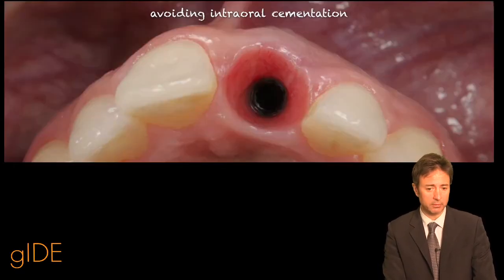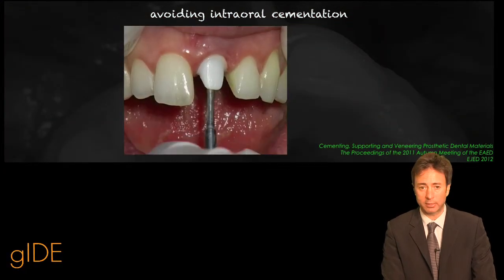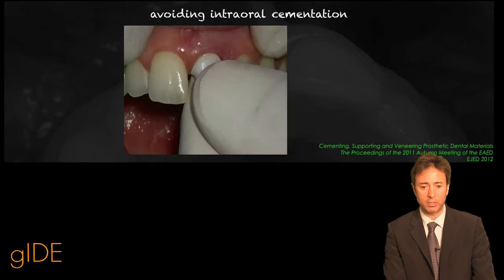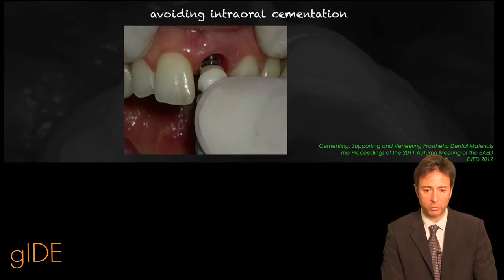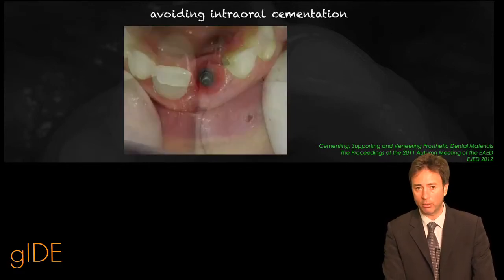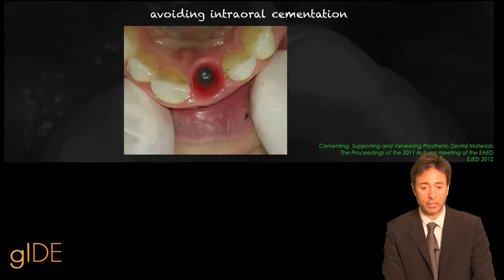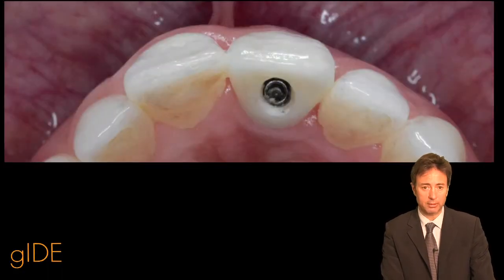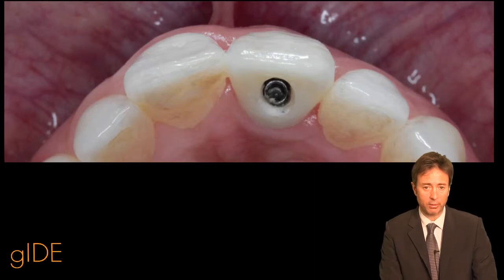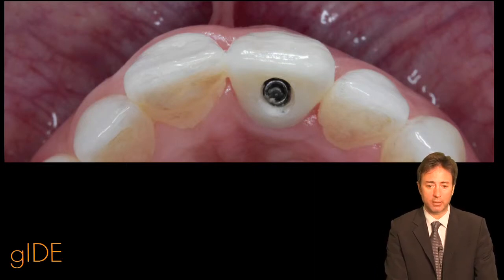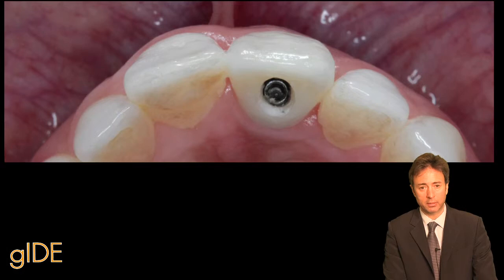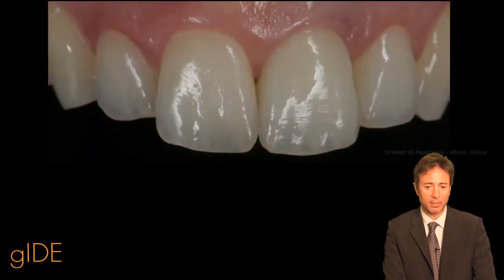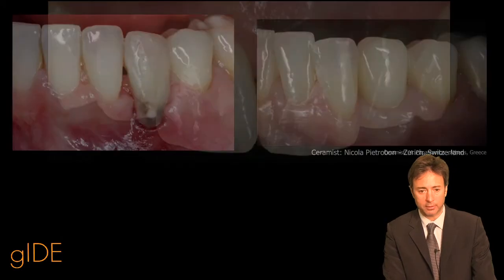When we place the implant, it is very important that we disconnect just one time. We will show you the whole procedure — how we do it and how we cement the crown extra-orally. It is very important that the implant is in the right position and that the access hole comes to the palatal surface, as you can see here.